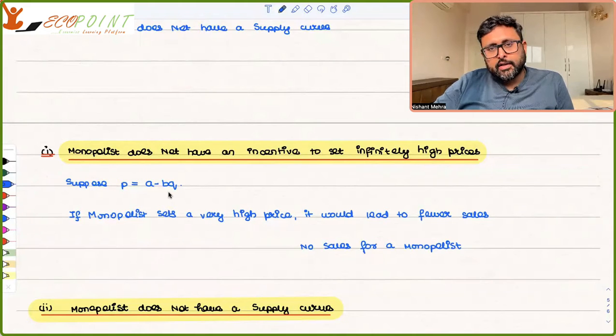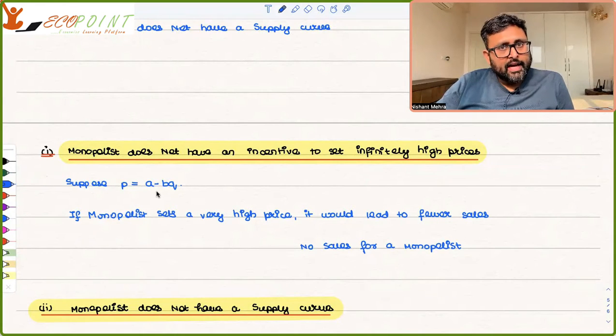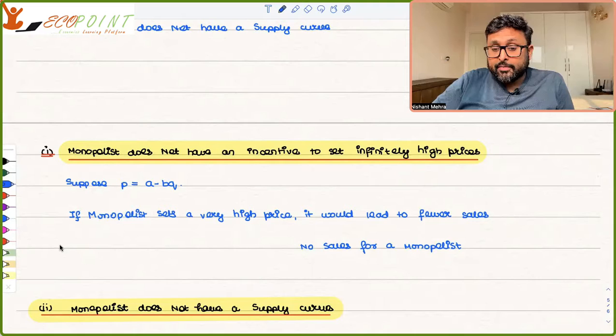Mainly, if this is the demand curve of the monopolist, it's a downward sloping curve. If monopolist is going to set very high prices, then people are not going to buy anything. Or people would buy very few units. So supposedly if it sets very high price, like for example,